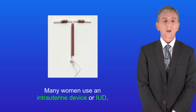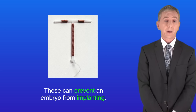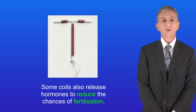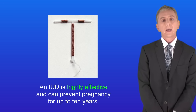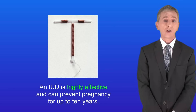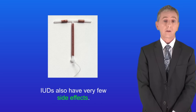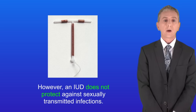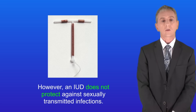Many women use an intrauterine device, or IUD, sometimes called the coil. These can prevent an embryo from implanting, and some coils also release hormones to reduce the chances of fertilization. An IUD is highly effective and can prevent pregnancy for up to 10 years, with very few side effects. However, an IUD does not protect against sexually transmitted infections.